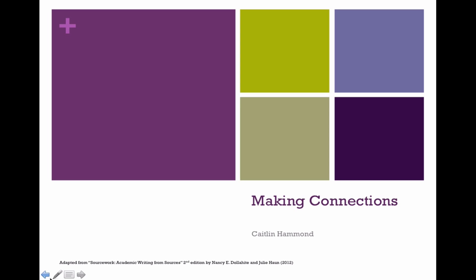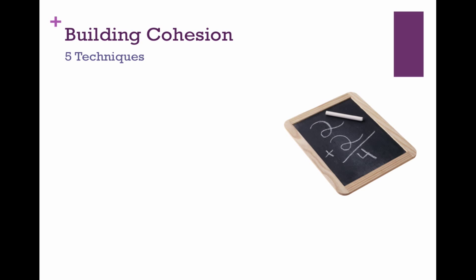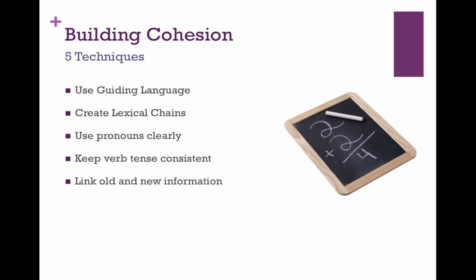Today we're going to talk about making connections, and this is really the last stage of writing an essay, because you want to go back through your body paragraphs and even between your paragraphs to make sure that your ideas are easy to follow for your reader. There are five techniques for building cohesion, but for the purposes of this class, we're only going to look at four.